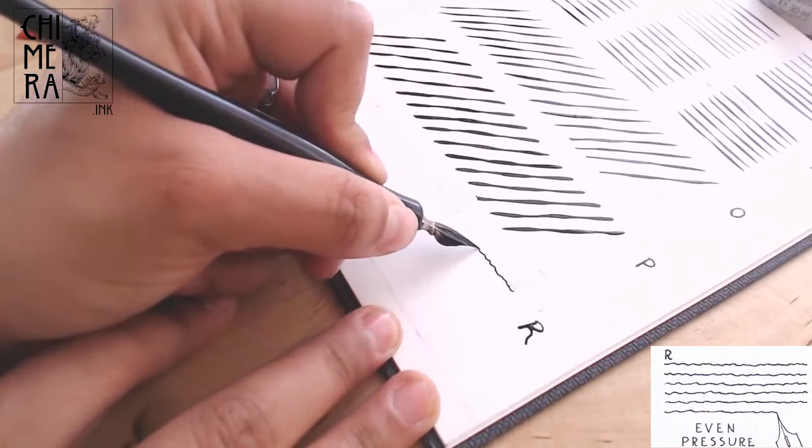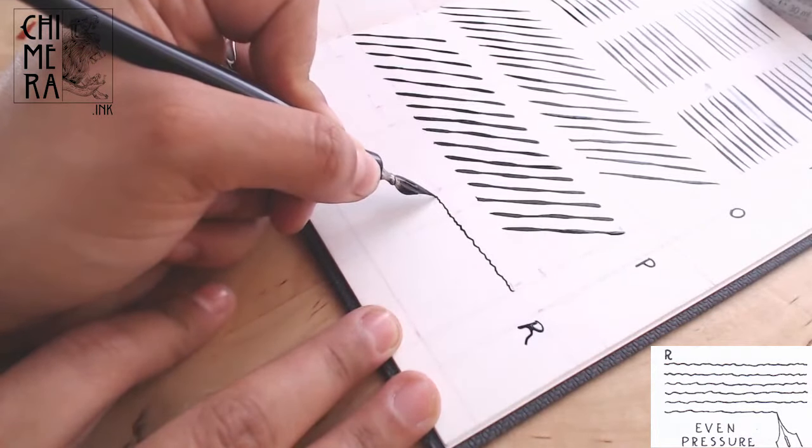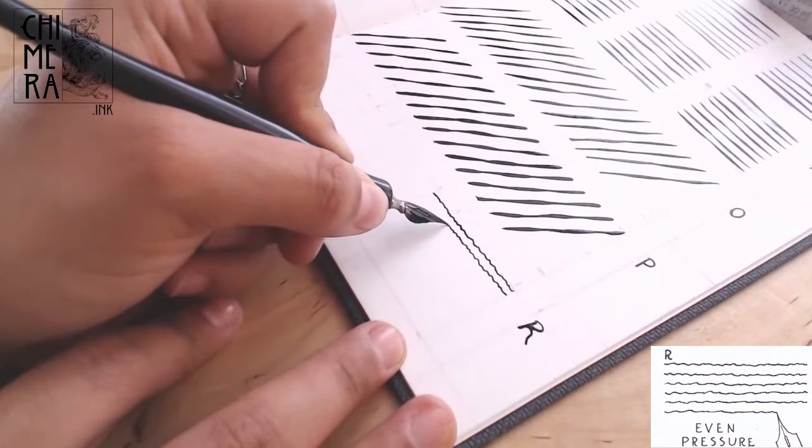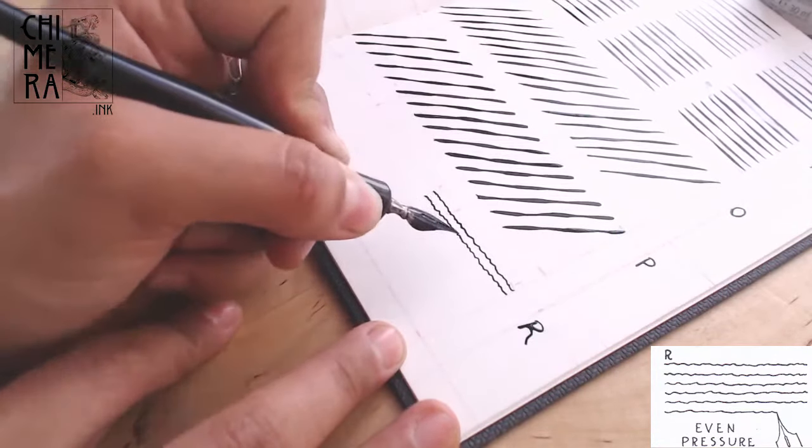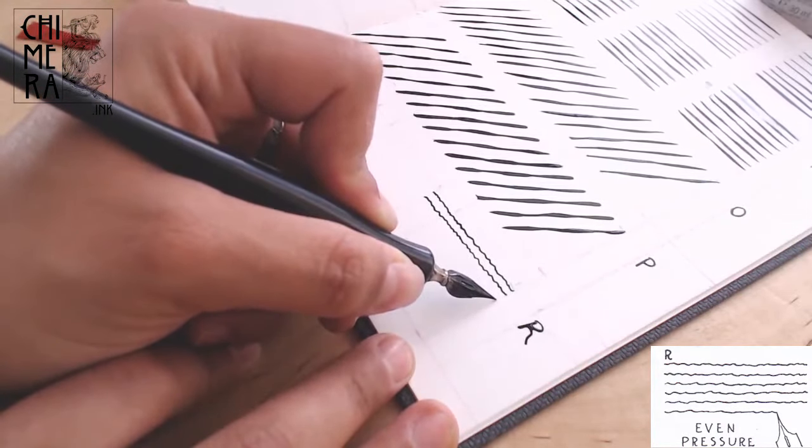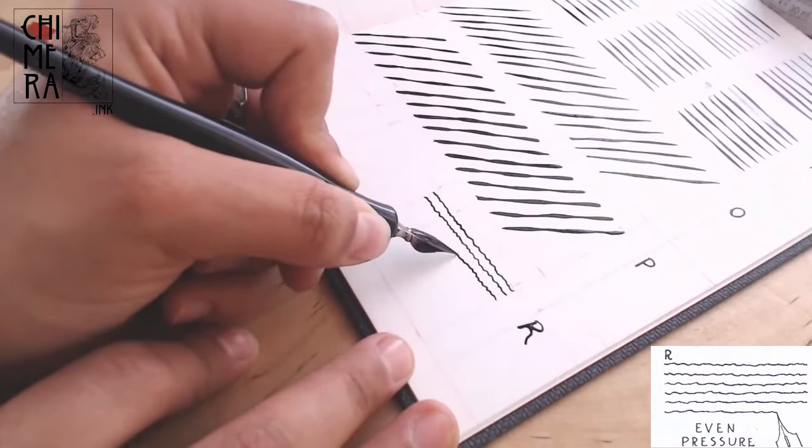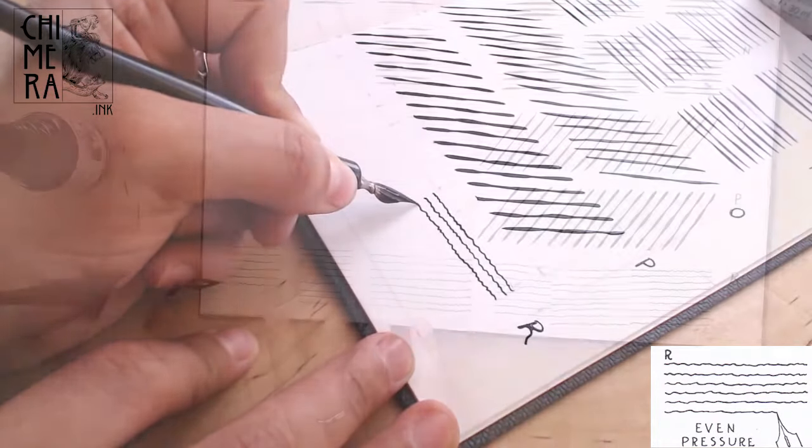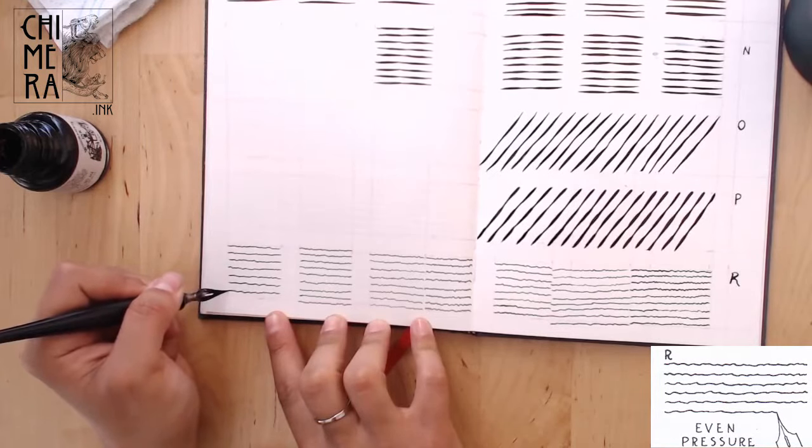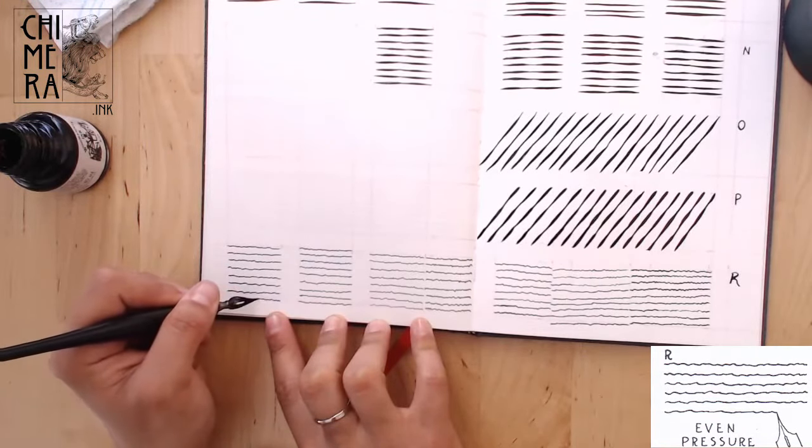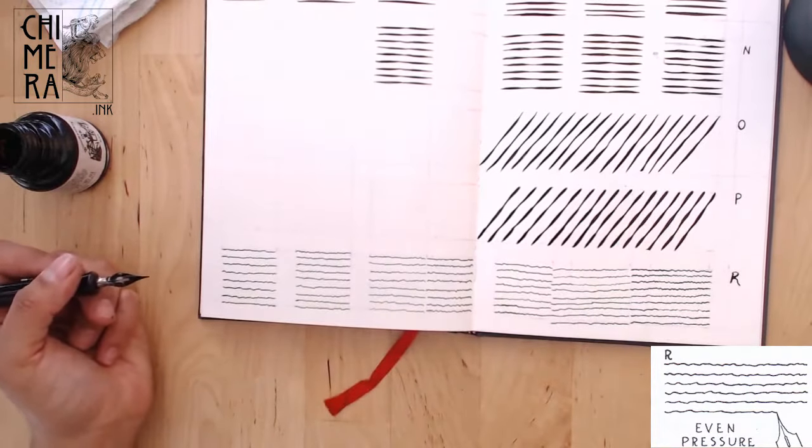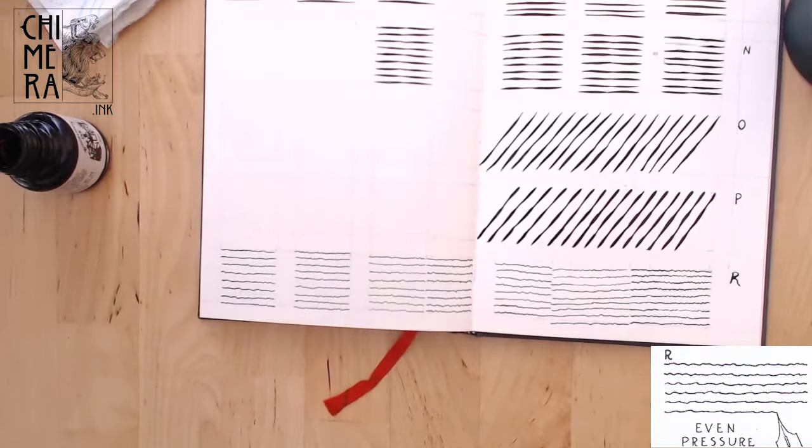R is an even line exercise, meaning there isn't any variation of pressure. The idea is trying to make the lines irregular and as random as possible, without having a repetitive pattern. As we'll see in future videos, this line is really nice to create a textured, interesting, organic value once it's all combined together in a section of a drawing. But that is for the future.